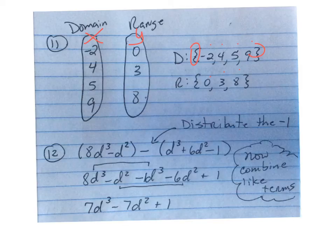On number 12, you had to solve the polynomial, and you have to distribute that negative 1. So when you distribute it, this is what you end up getting. Now, we have to combine like terms, and that's what I did.